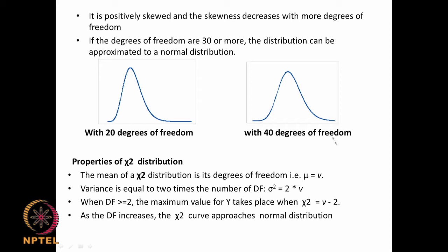At 40 degrees of freedom, the chi-square distribution looks almost like a normal distribution. At 20 degrees of freedom you can still see the skewness. That is why it is generally believed that if you have 30 or more degrees of freedom it will approximate to a normal distribution. The mean of a chi-square distribution equals the degrees of freedom (μ = ν), and the variance equals 2 times the degrees of freedom (σ² = 2·Df).